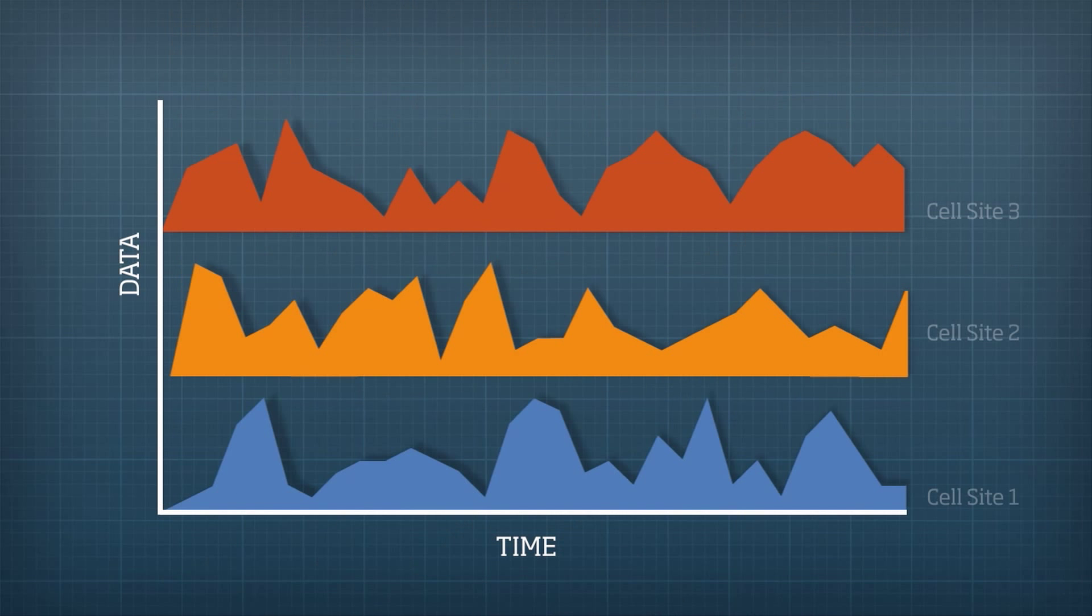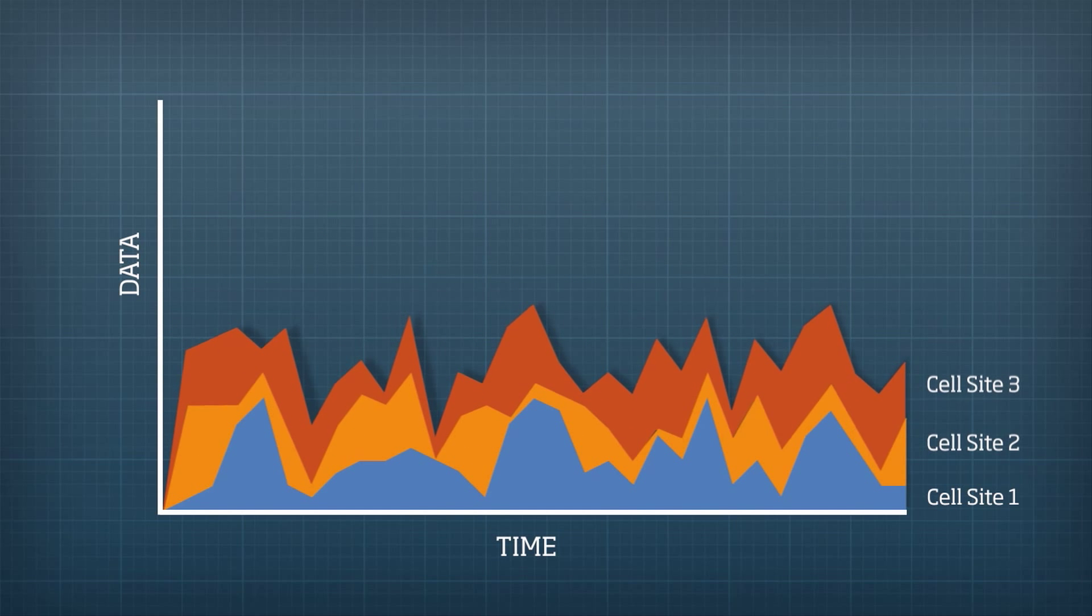Our VectorStar Multipoint product takes advantage of this and aggregates traffic, so the peaks from one site cancel with the troughs from another. We also call this statistical multiplexing.